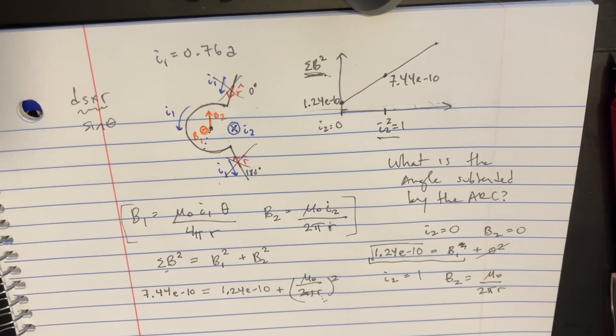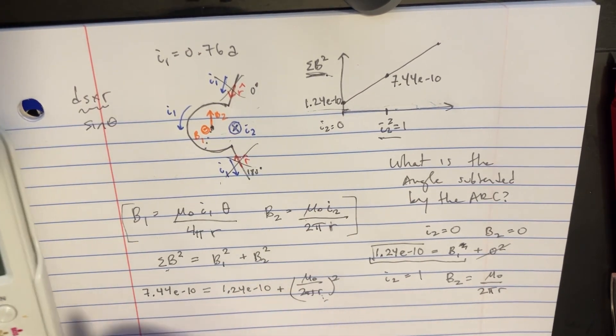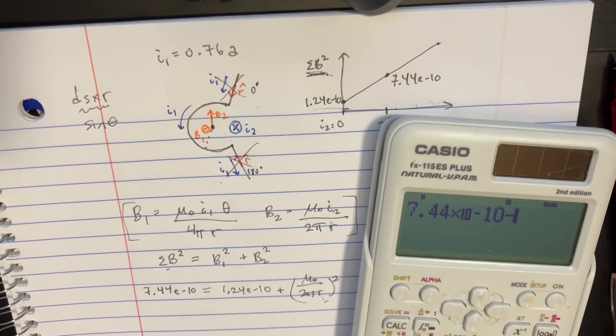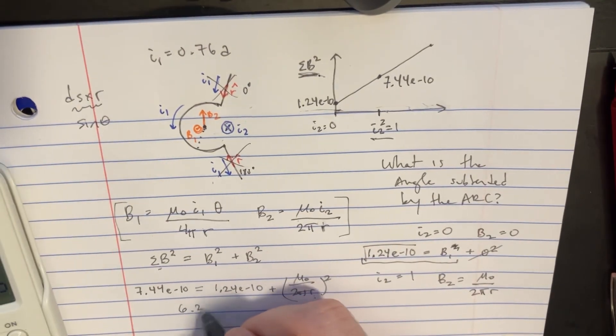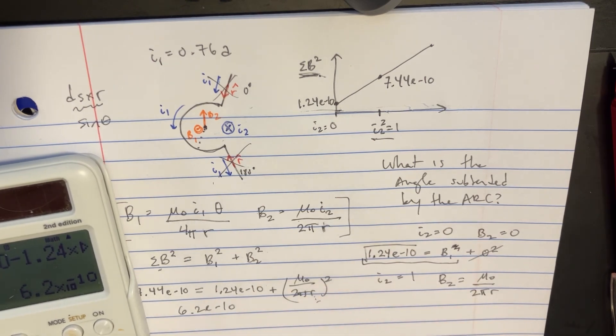Let's go ahead and do that. We will basically subtract this from that. Okay, like 7.44, negative 10, minus 1.24. 6.24 is 6.2. And then that's going to equal that. Let's go ahead and square it.